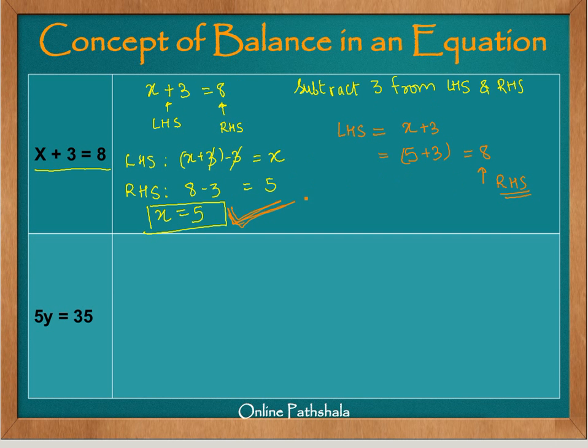Now let us look at another example. Now in this case, we have 5y equals 35. 5y equals 35. Now I want to isolate y in this case. How do we do that?